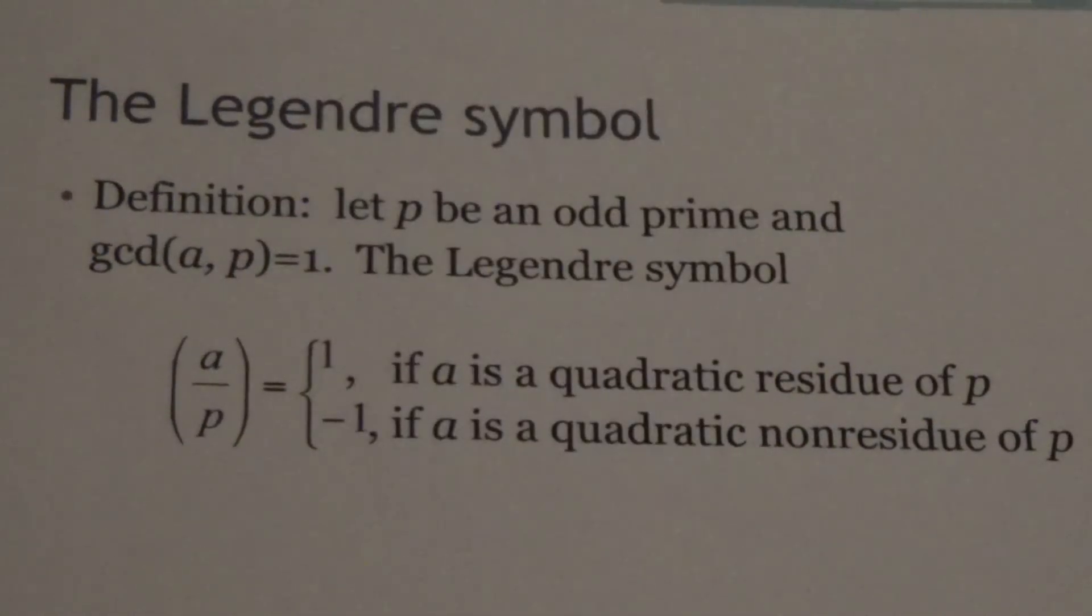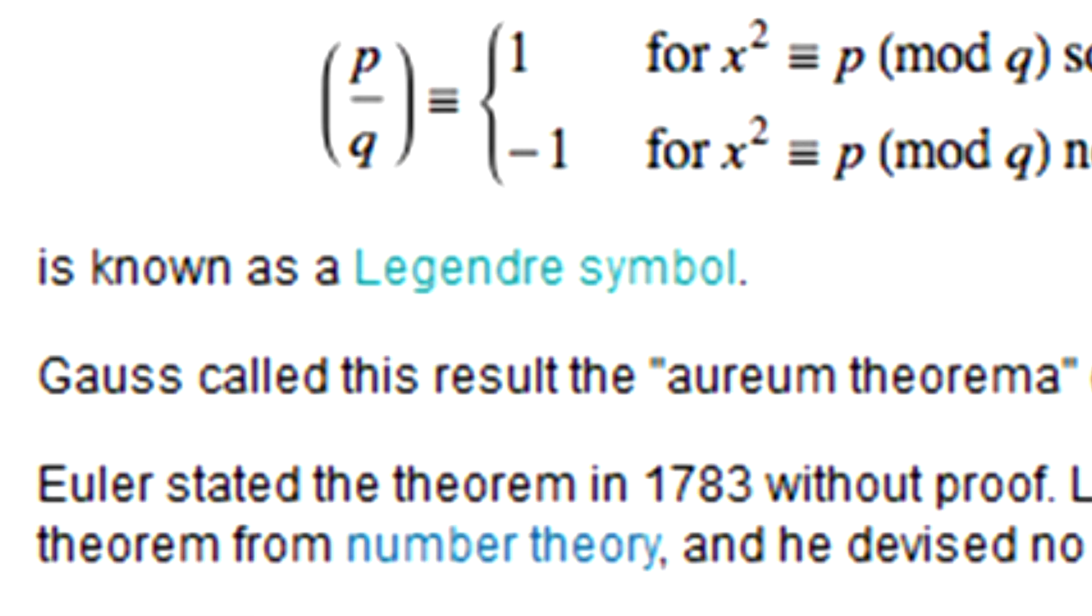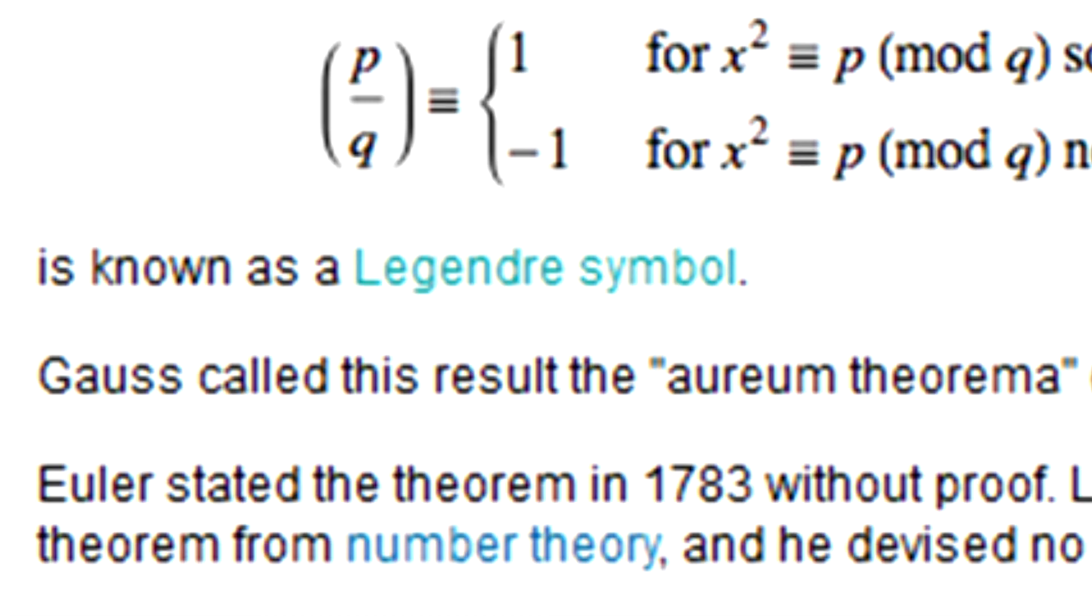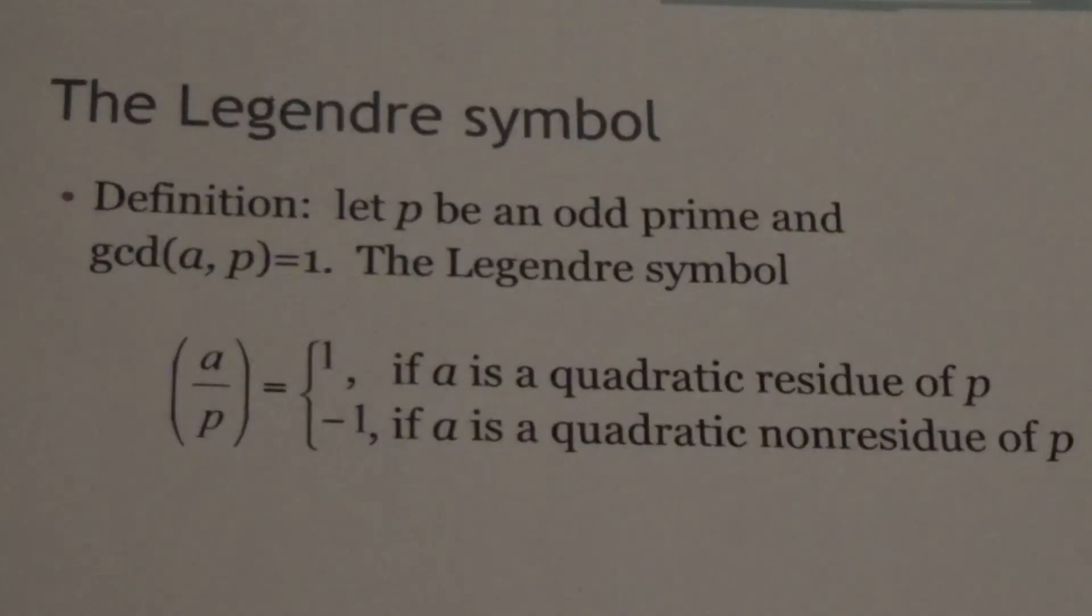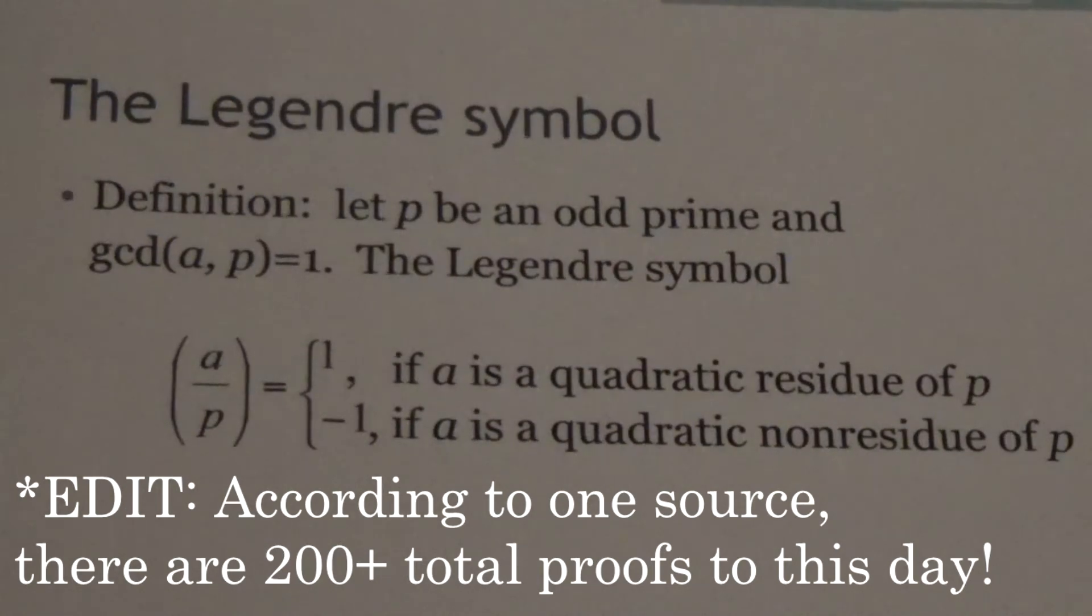And he, in fact, called it the Aureum Theorema. I'm probably mispronouncing that, but it's German for basically a golden theorem. And in his lifetime, Gauss actually published eight proofs of this theorem. It's truly amazing. To this day, at least 50 proofs have been discovered for this law of quadratic reciprocity. So it's very interesting.